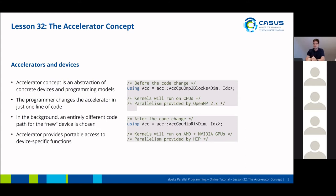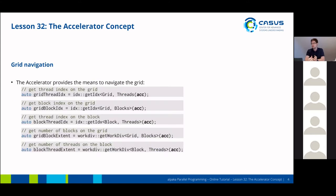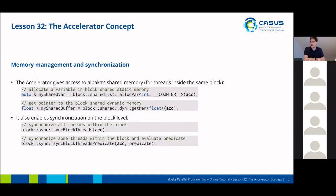The accelerator also provides portable access to device-specific functions. For example, the accelerator enables you to navigate the grid as we've seen yesterday, so through the accelerator you can get access to the index and extent functions. The accelerator also gives you access to the shared memory layer for threads inside the same block. You can allocate a variable in static memory and also allocate shared memory beforehand as you would in CUDA, for example, which you can also query with Alpaca.